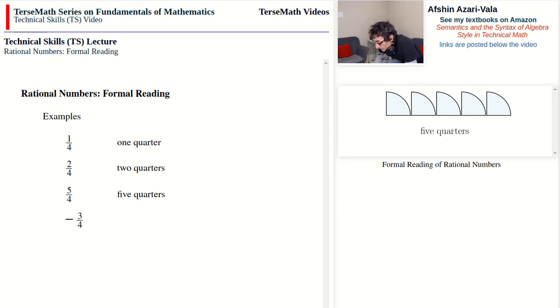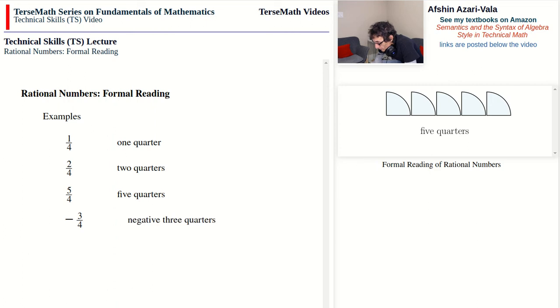So we read this as negative three quarters. Now that we're talking about the formal reading of rational numbers, it may be a good time to also talk about how we formally read mixed numbers.